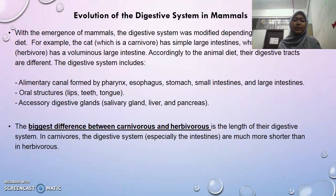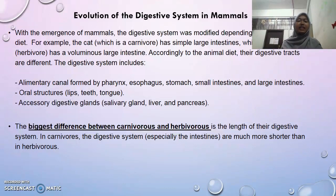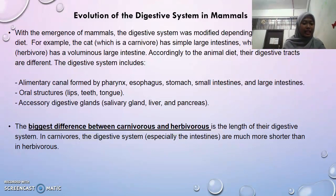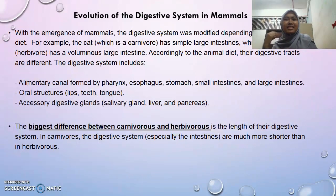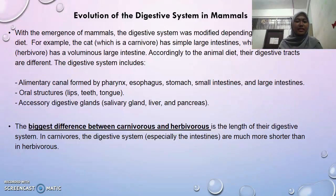The biggest difference between carnivores and herbivores is the length of their digestive system. In carnivores, the intestine is much shorter than in herbivores. This is because plants are more complex to digest than flesh. The flesh eaten by carnivores is more easily broken down, so it needs to be processed as fast as possible so that the animal can absorb all the nutrients.